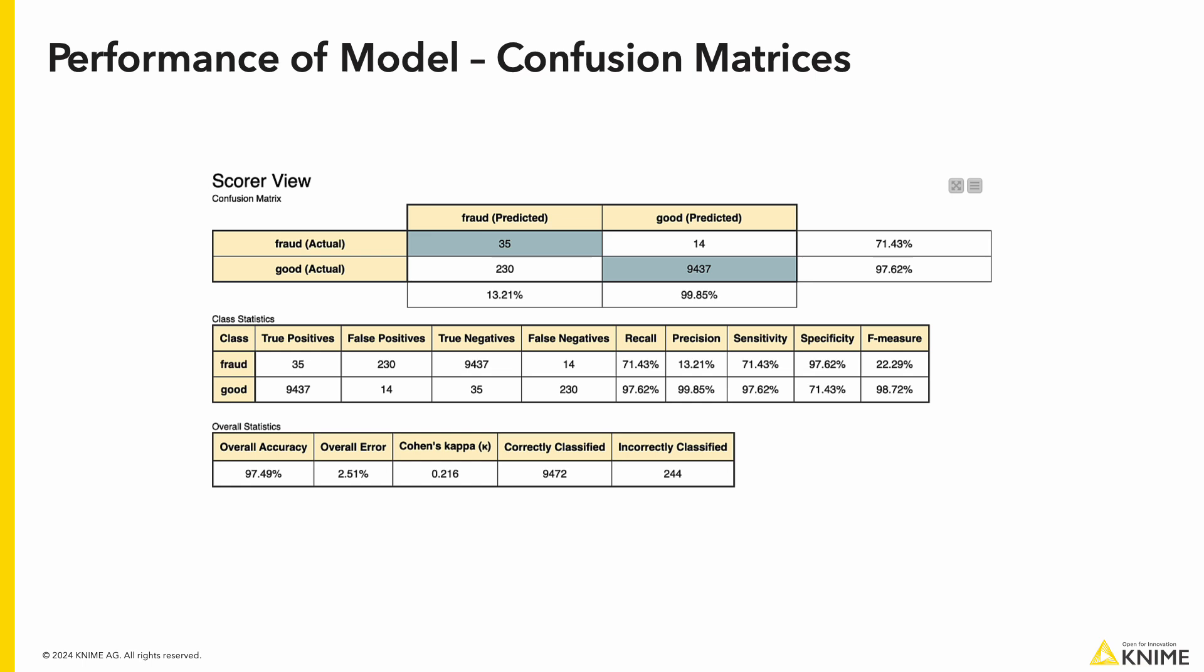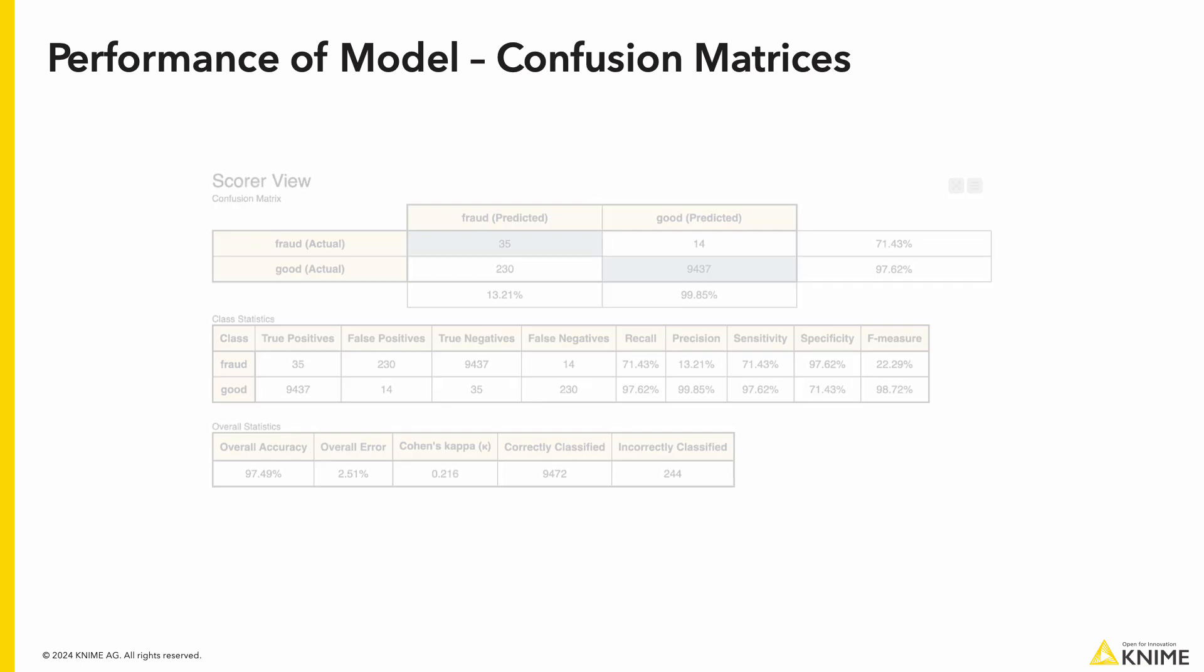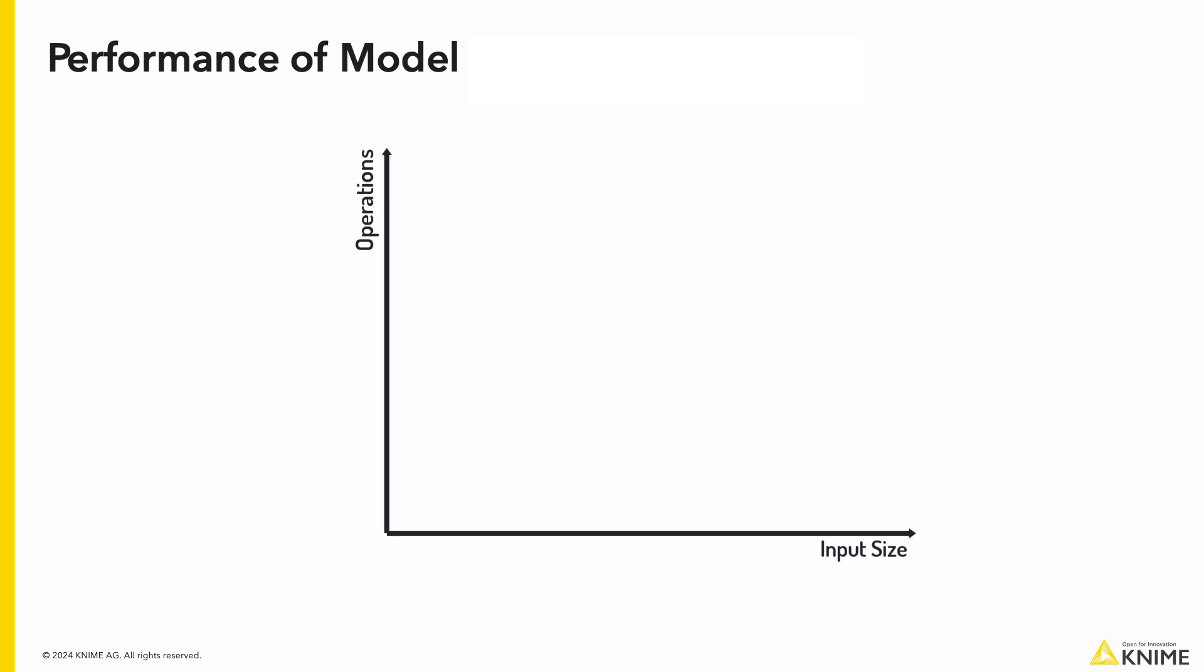Now, why would we use this over DBSCAN as it performed slightly worse? The algorithm for isolation forest runs much faster than DBSCAN. Using time complexities, we have isolation forest running in linear time or big O of N, while DBSCAN runs in log linear time, which is big O of N log N. Depending on your use case, it is worth to consider the pros and cons between the two methods.